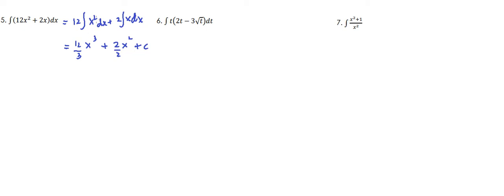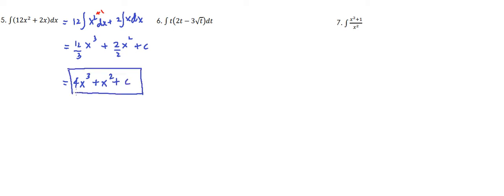Basically, we just add 1 to our power and whatever the sum is, that becomes the denominator. So if we have 2 plus 1, that would be equal to 3, and over 3. So let's evaluate: 12 divided by 3 is 4, so we have 4x cubed. And 2 divided by 2 is 1, so we have x squared plus C.